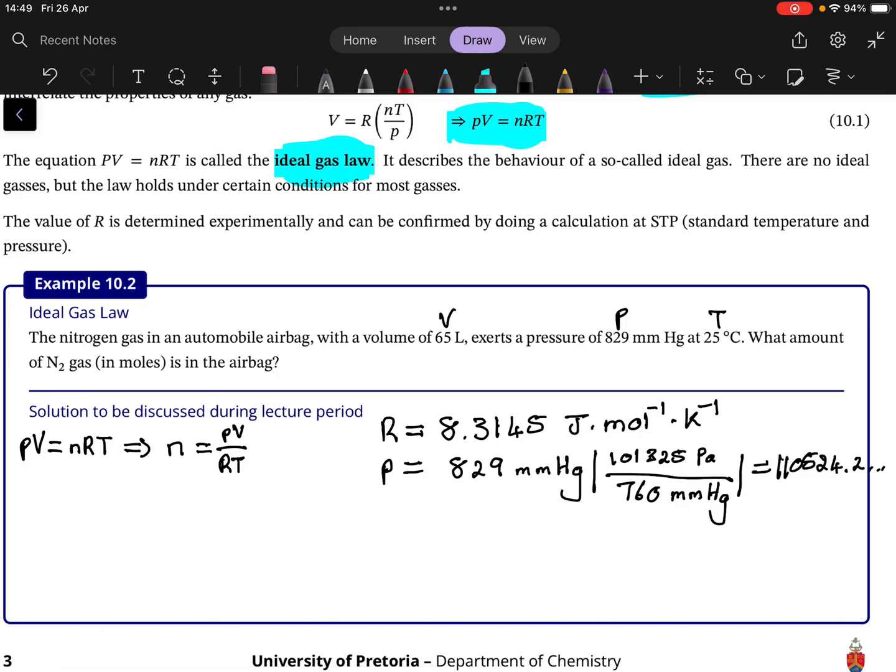Then what we have left over, the volume. The volume is currently in liter, the SI unit of volume is cubic meter. So one cubic meter contains 1000 liter, always shocking how much that is. And then this will be 65 times 10 to the negative 3 cubic meter.